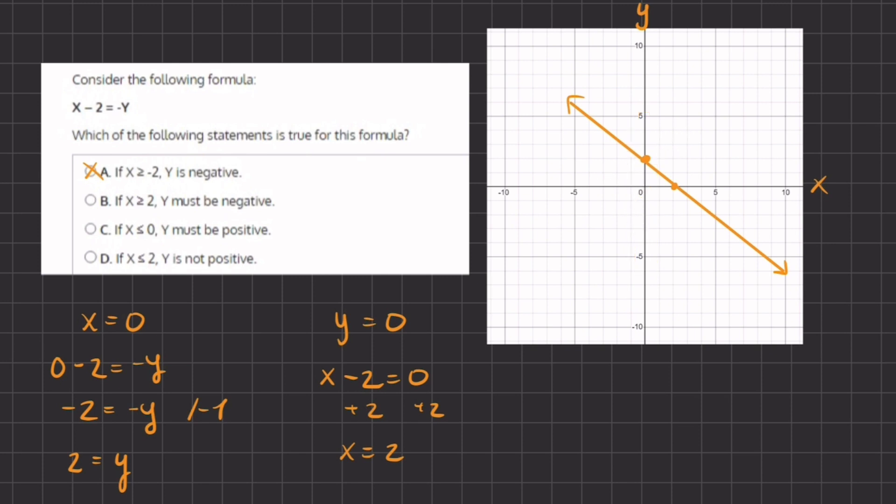Now let's read answer B. If x is greater than or equal to 2, then y must be negative. Well, let's go to x is 2, which is right over here. And if x is going to be greater than or equal to 2, then the y must be negative.